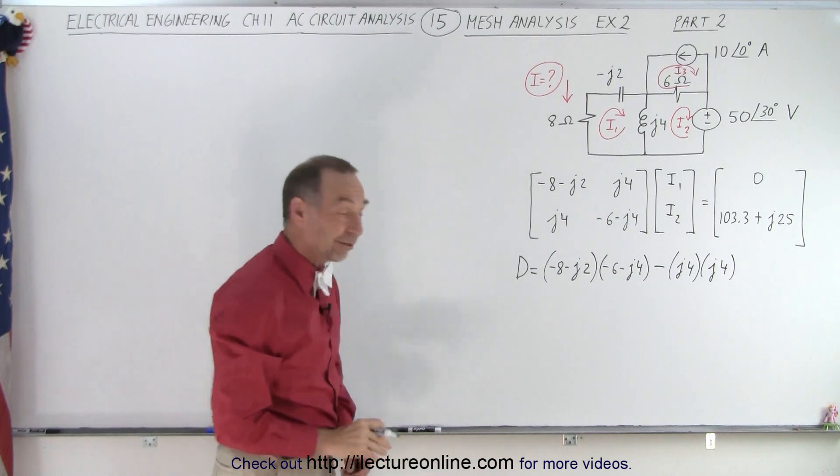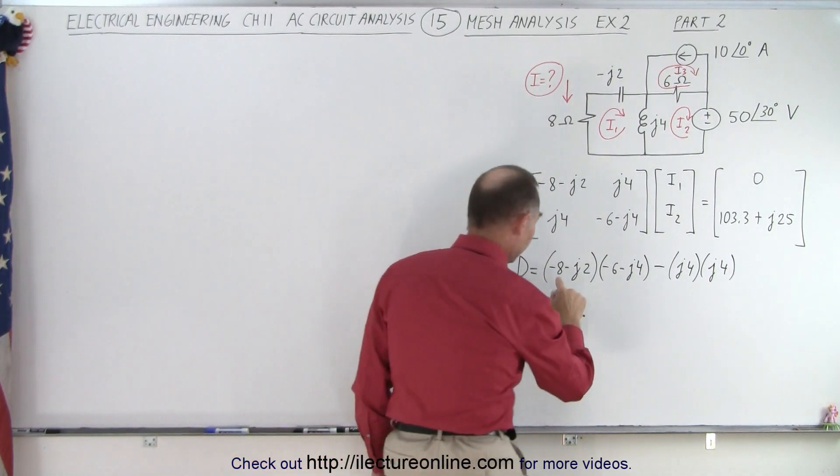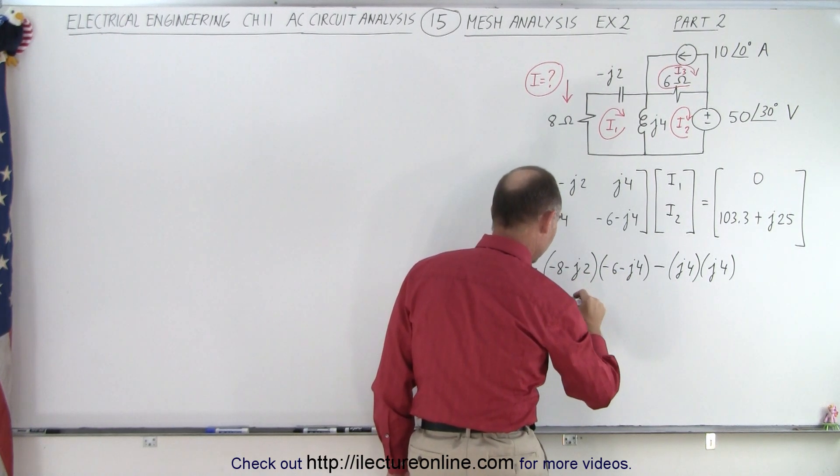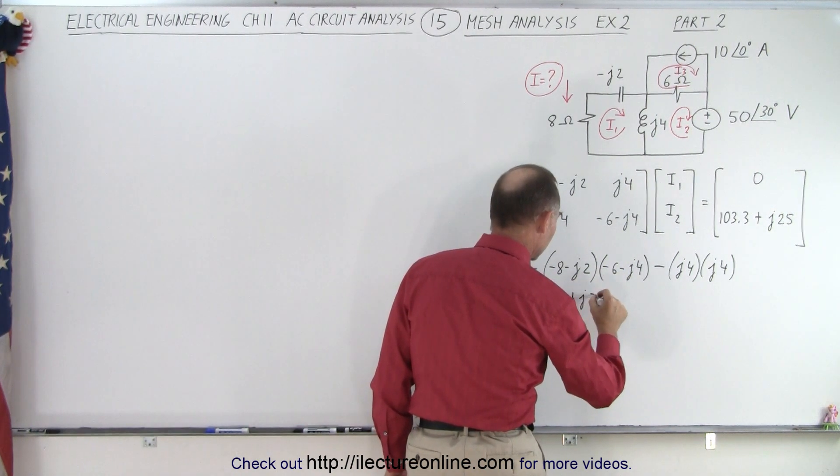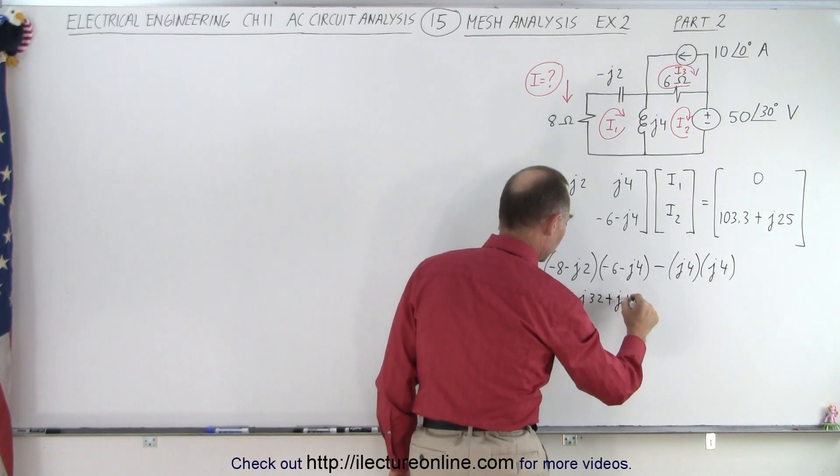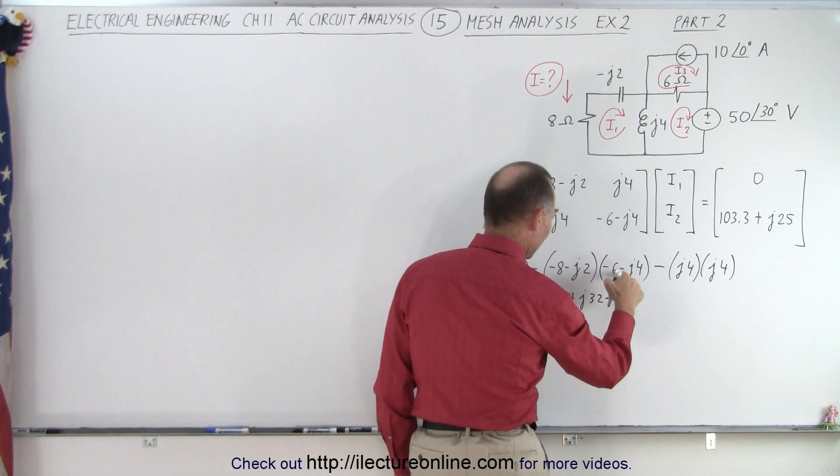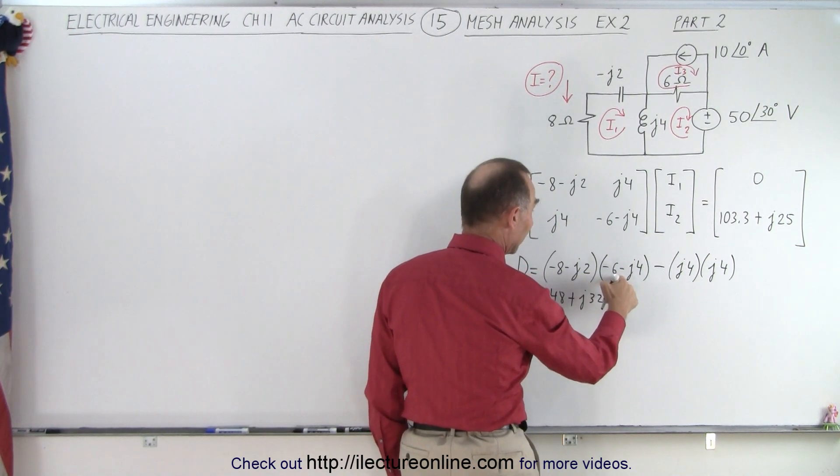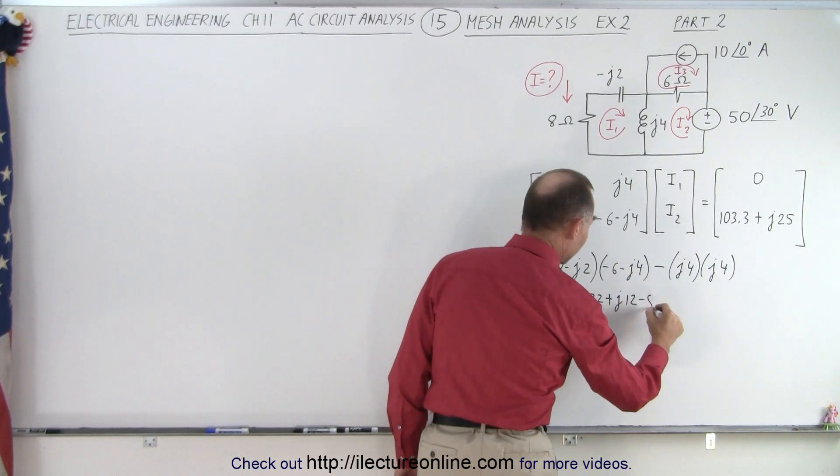So let's go ahead and solve that. First of all, we have minus 8 times minus 6, that's 48, minus 8 times that, so we have a plus J32, minus times minus comes plus J12, and this times this, so we have minus times minus gives me a plus, but J times J gives me minus, and 2 times 4 is 8, so minus 8.